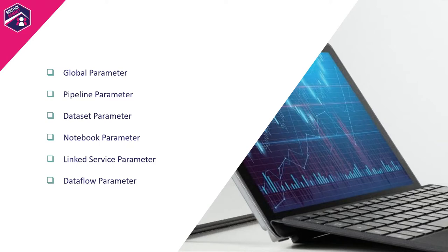Within Azure Data Factory there are a couple of options to use parameters. We have the global parameters, the pipeline parameters, the dataset, the notebook, the linked services and the data flow. Passing parameters to Azure Data Factory or Azure Synapse is quite important as it provides the flexibility to create dynamic pipelines. To reference a parameter you must provide a fully qualified name — no shorthand. Parameter names are also case sensitive. A parameter could be used as a user input passed from the pipeline layer, or as input coming from an activity within the pipeline — so I can pass it from pipeline A to pipeline B to pipeline C, for example.